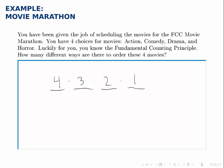So if we multiply these four together, four times three times two times one is 24. So there are 24 total possible ways that you could order these movies.